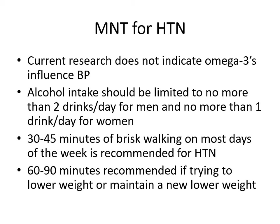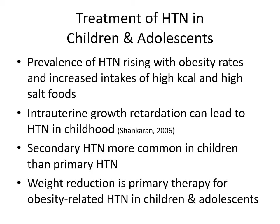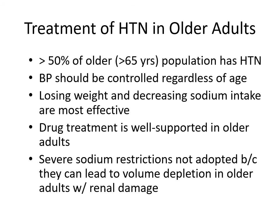Looking at treatment of hypertension in children and adolescents: the prevalence is rising with obesity rates and increased intakes of high-calorie, high-salt foods. Intrauterine growth retardation can lead to hypertension in childhood. Secondary hypertension is more common in children than primary hypertension. Weight reduction is the primary therapy for obesity-related hypertension in children and adolescents. In older adults, more than 50% of those over age 65 have hypertension. Blood pressure should still be controlled regardless of age; losing weight and decreasing sodium intake are the most effective means. Drug treatment is also well-supported in older adults, though severe sodium restrictions are not adopted because they can lead to volume depletion in older adults with renal damage.